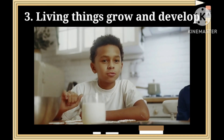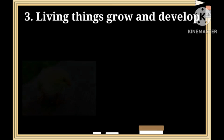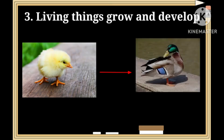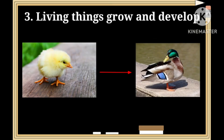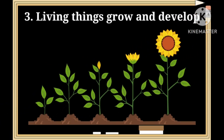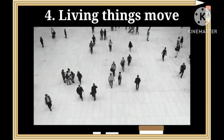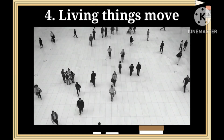Number three: living things grow and develop. When living things eat, they receive energy which helps them in their growth. Living things grow from smaller to larger and finally become adults. Human beings grow from infants into adults; seeds grow into baby plants and finally into big plants.